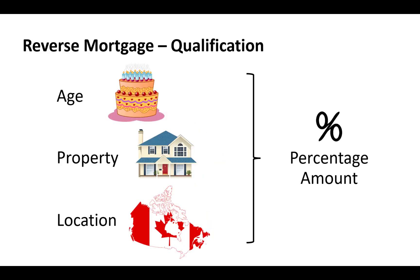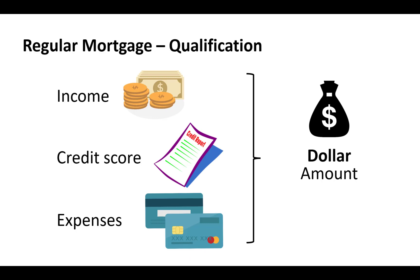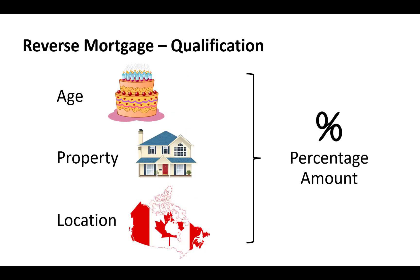Reverse mortgage qualification is completely different. It's based on your age, your property, and your location, and you'll get a percentage amount, not a dollar amount. Ultimately you will get dollars further down the line, but the qualification is actually a percentage amount, not a dollar amount. Rather than being based on income, credit score, and expenses, it's based on your age, your property, and location.